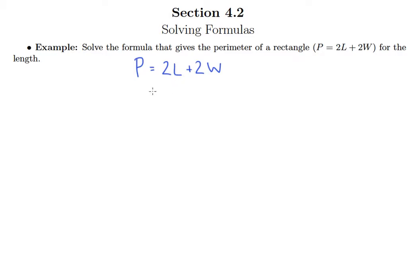Why would you want this? Well, maybe if you know what perimeter you want and you know what width you want, you'd like to be able to just plug those numbers in quickly and figure out what length to make your rectangle. So that might be a situation where you would want to have the length solved for instead of the perimeter P.